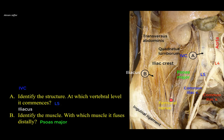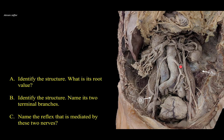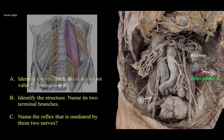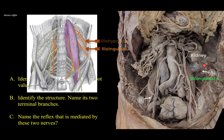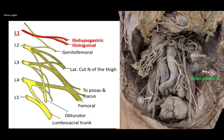The iliopsoas muscle is supplied by the femoral nerve, which can be seen in the groove between it and the psoas major muscle. Identify structure A, what is its root value, and identify structure B and name its two terminal branches. Nerve A is located in the posterior abdominal wall, arising from the lateral side of the psoas major muscle above the iliac crest, also related to the inferior pole of the kidney. This is the ilioinguinal nerve. It passes in parallel with a nerve located a little bit higher — the iliohypogastric nerve. Both the iliohypogastric and ilioinguinal have the same root value: L1 anterior primary ramus. Either before or soon after emerging from the lateral border of psoas major, they split from each other.